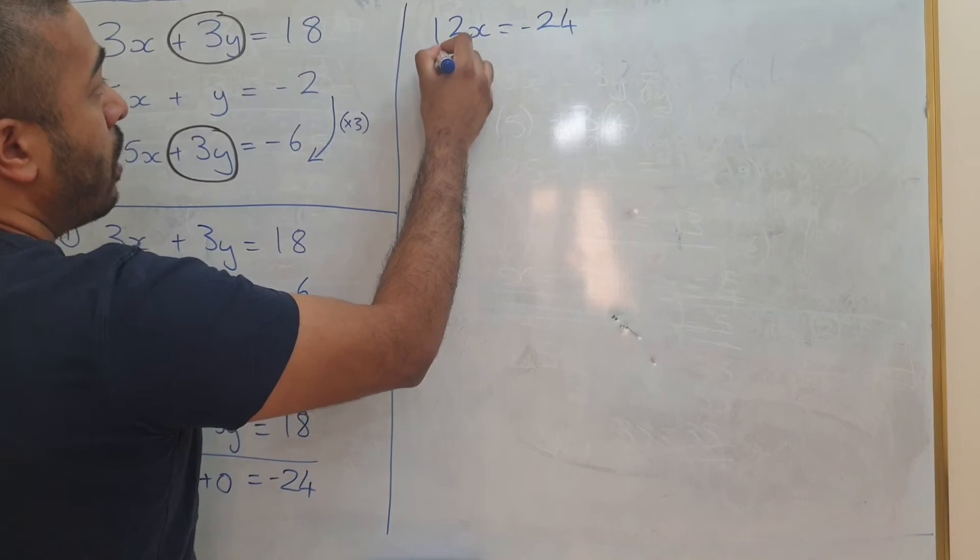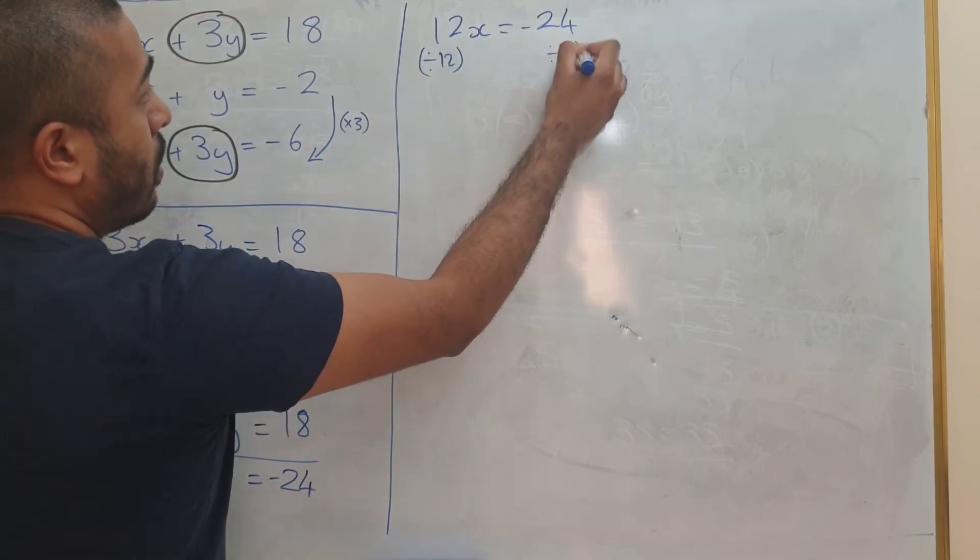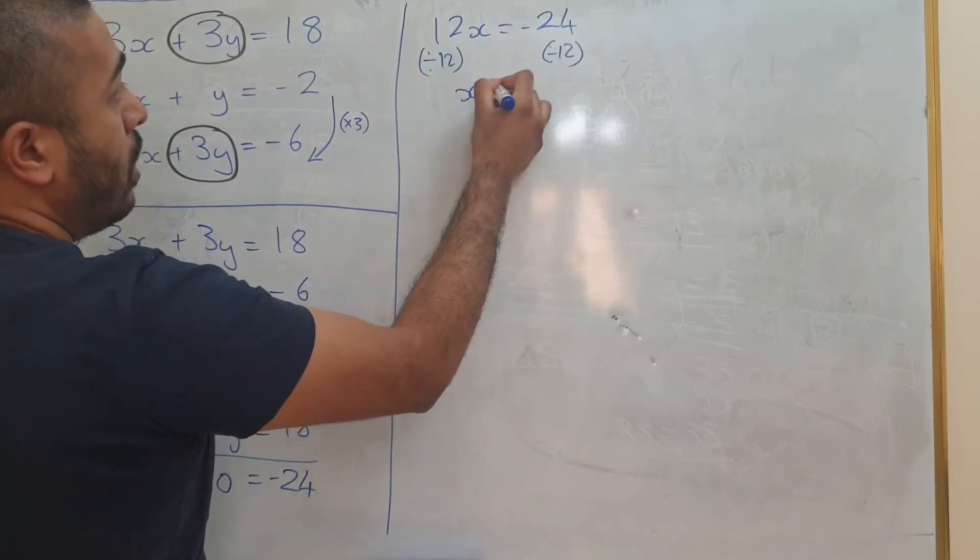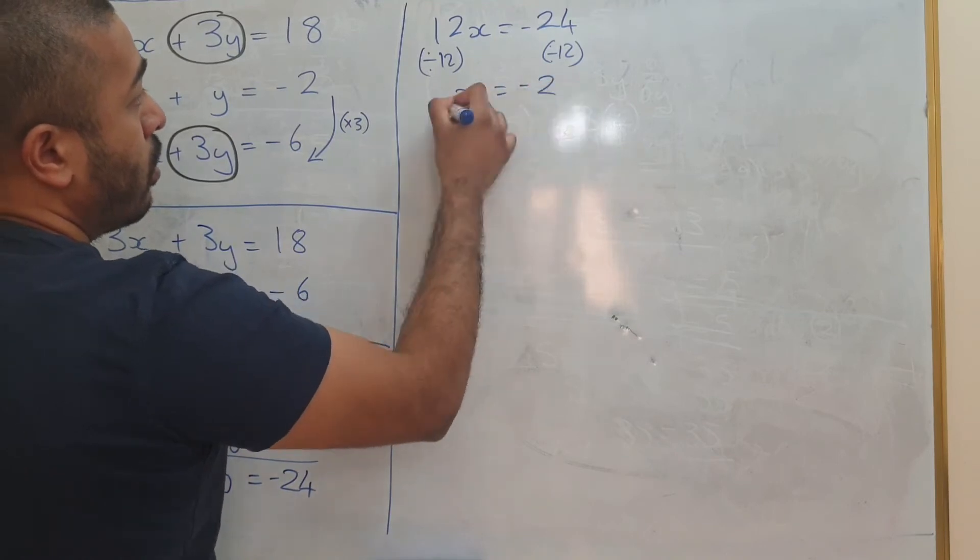If I divide both sides by 12, I get x equals minus 2.